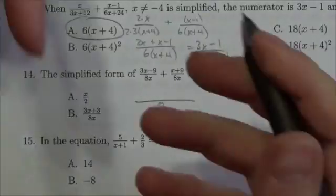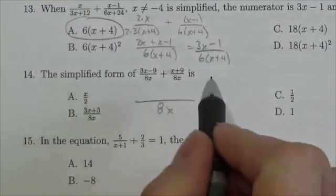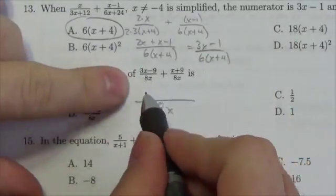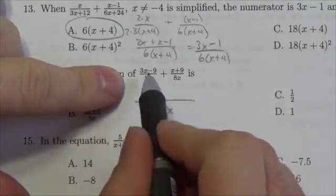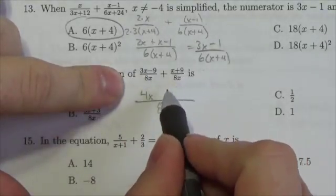So I can just add the two numerators together. 3x plus x is 4x, and negative 9 plus 9 is 0.